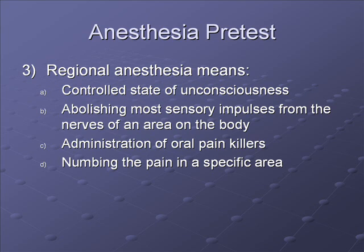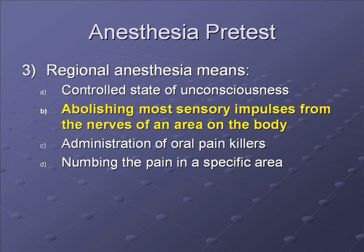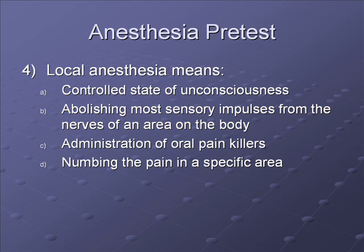Question 3: Regional anesthesia means — A. Controlled state of unconsciousness, B. Abolishing most sensory impulses from the nerves of an area on the body, C. Administration of oral painkillers, or D. Numbing the pain in a specific area. The correct answer is B. Remember, regional anesthesia blocks a nerve or a group of nerves that innervate a certain area.